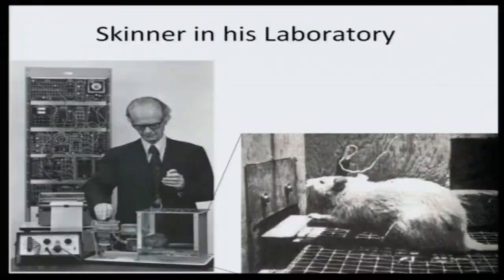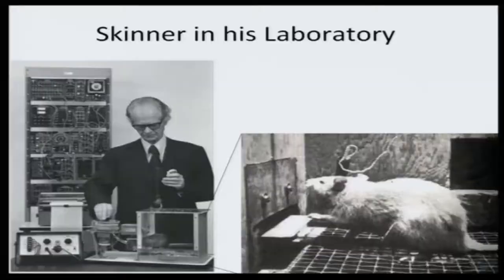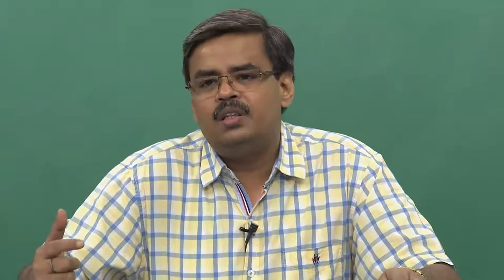In the Skinner box, a white rat was kept, and this was the experimental demonstration of the tendency to escape punishment. The rat was subjected to electric shocks coming through the metallic grid at the bottom of the cage. In order to escape the mild electric shock, the rat had to make a certain desired movement. That desired movement would help the rat escape the shock. This was making the rat learn how to respond — not to receive a reward, but to escape punishment.